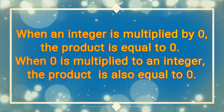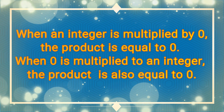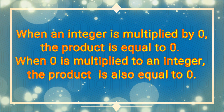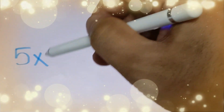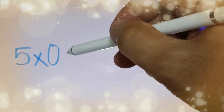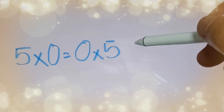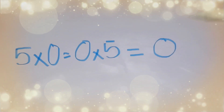When an integer is multiplied by 0, the product is equal to 0. And when 0 is multiplied by an integer, the product is also equal to 0. For example, 5 times 0 is equal to 0 times 5, and it's equal to 0.